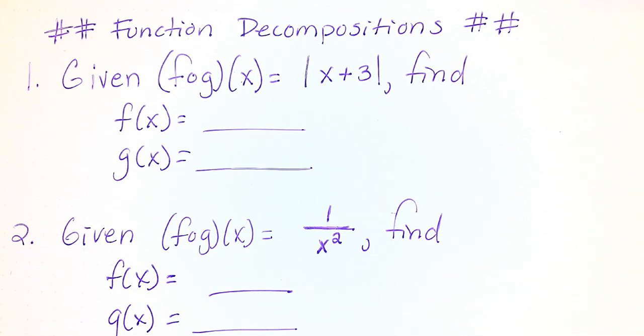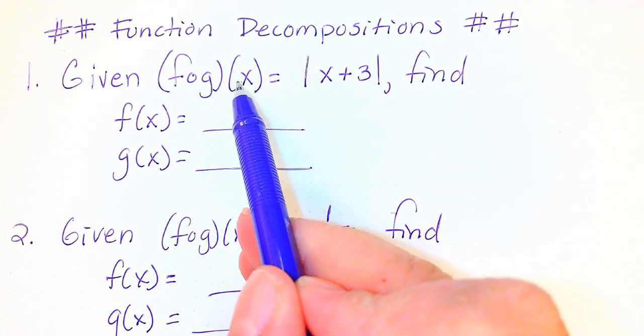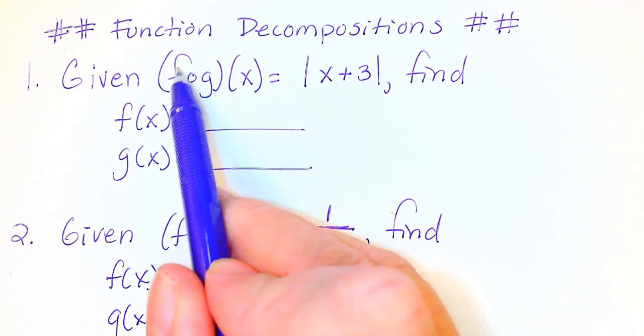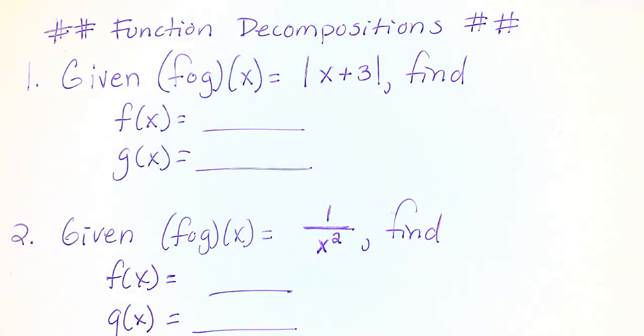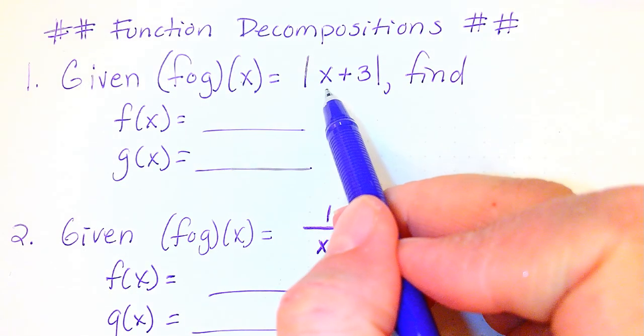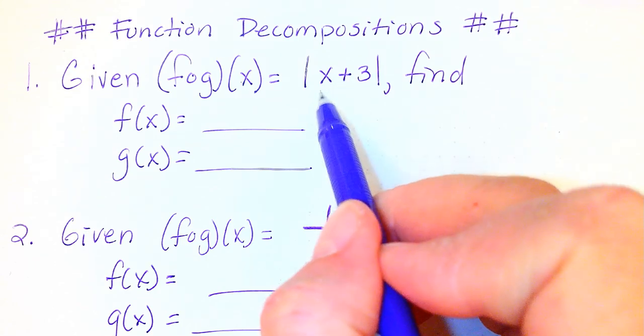What we want to look at with number one is we have given f of g of x equals absolute value of x plus 3, find f of x and g of x. We need to remember that with f of g of x, the g is going into the f function. So something inside would be your g and the outside function would be your f of x. In this case, our inside function would be x plus 3.